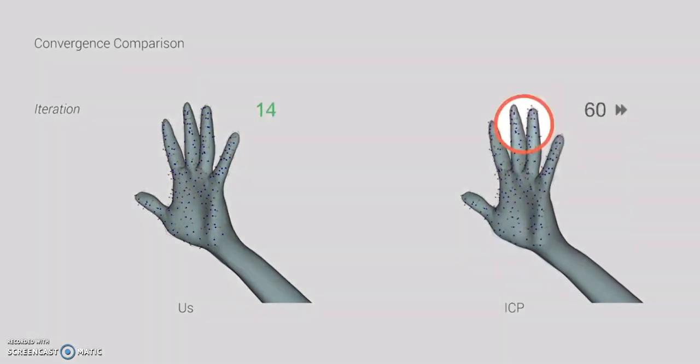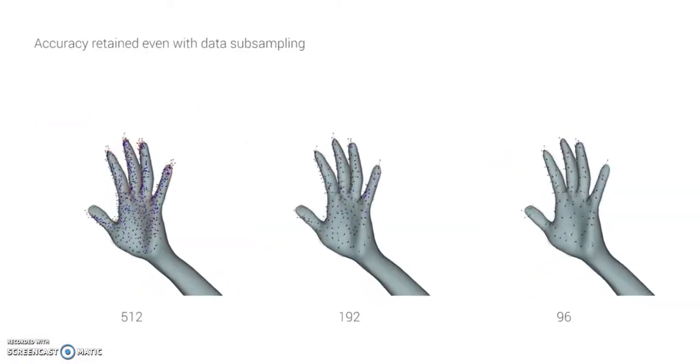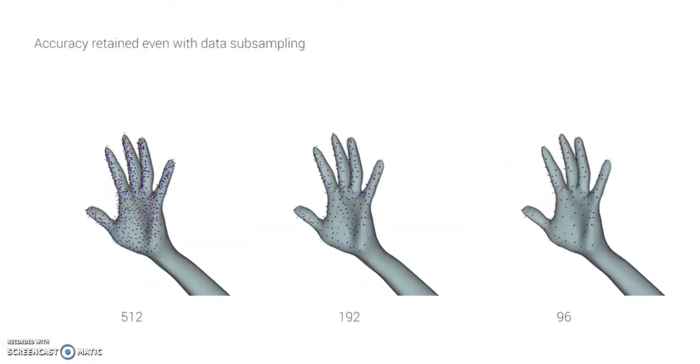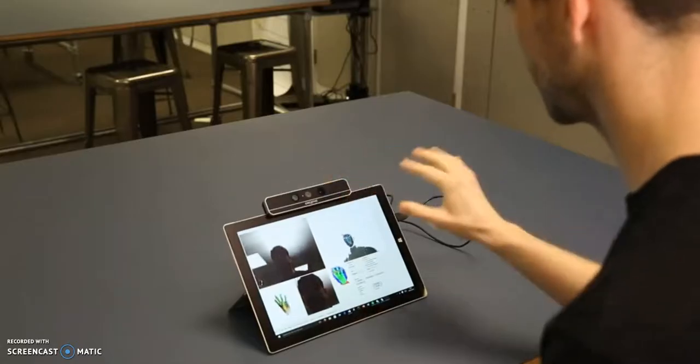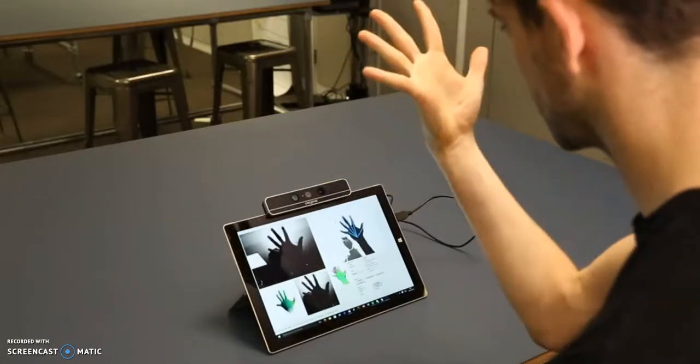This is despite the use of a more detailed, smooth surface model rather than just a collection of cylinders. Further efficiency comes from massively subsampling the data, which surprisingly yields very little impact on accuracy. This allows us to run the tracker on just a lightweight tablet.